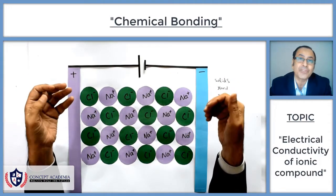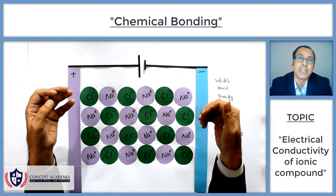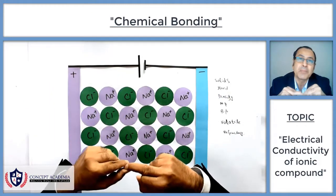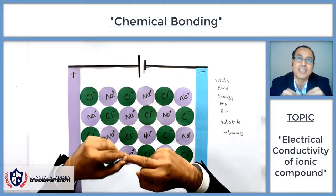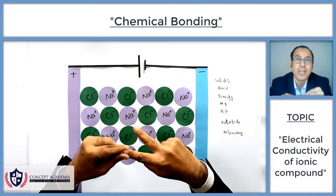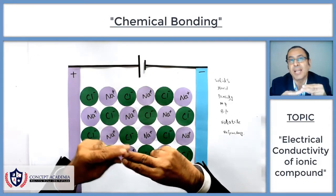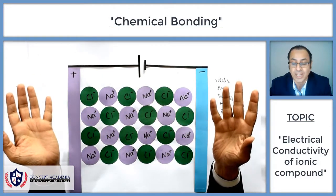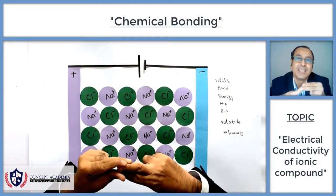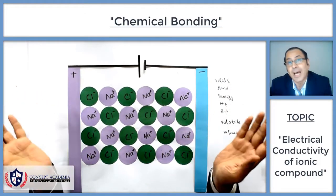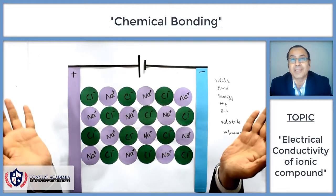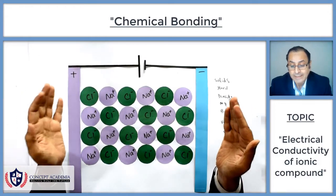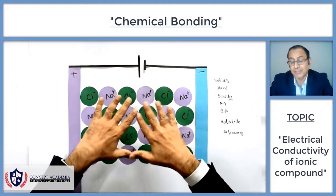For electrical conductivity, two conditions must be fulfilled: number one, there must be the presence of charged particles, and number two, they must be free to move. If these two points are fulfilled, electrical conductivity is possible. If any one of these two points is not fulfilled, electricity cannot be conducted.